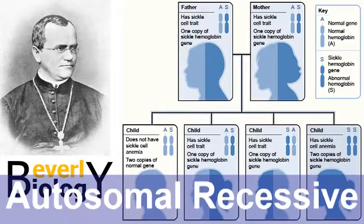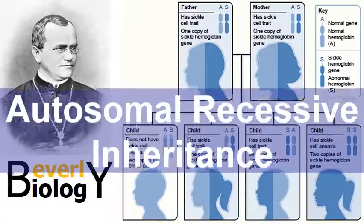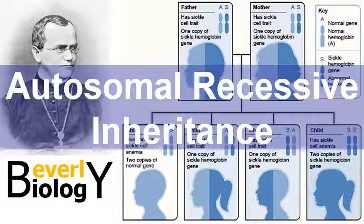In this video we're going to discuss autosomal recessive inheritance. This is the genetics pattern uncovered by Gregor Mendel when he experimented with pea plants. However, in this video we're going to focus on human examples. So let's get started.